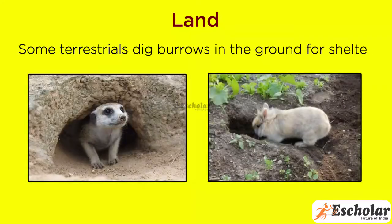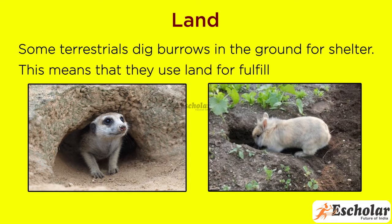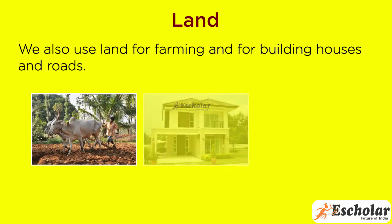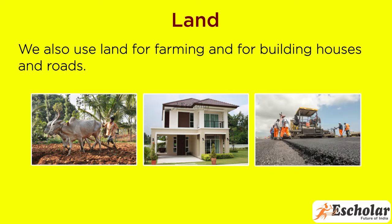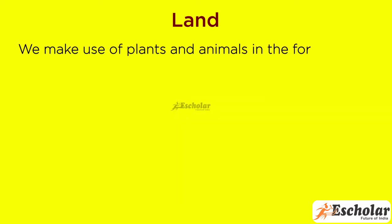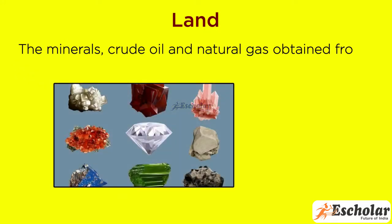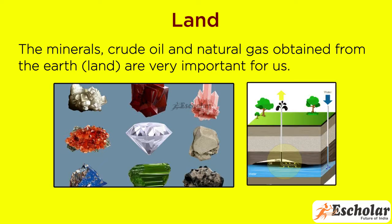Some terrestrials dig burrows in the ground for shelter, which means they use land for fulfilling their needs. We also use land for farming and for building houses and roads. We make use of plants and animals in the forest that grow on land. The minerals, crude oil, and natural gas obtained from the earth are very important for us.